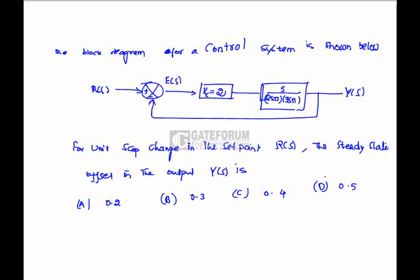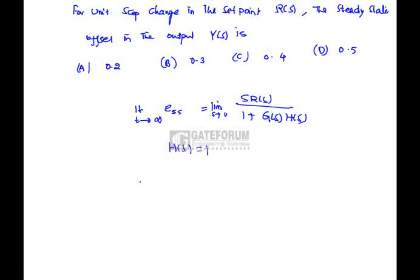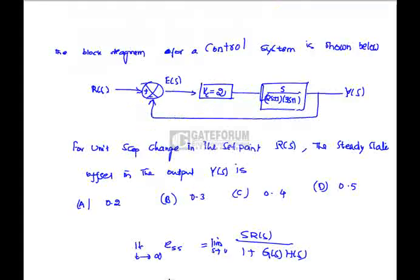Question is the block diagram for a control system is shown below. For unit step change in the set point, the steady state offset in the output Y of s. We know that the steady state error equation, that is limit t tends to infinity e of s. This is nothing but s into r of s limit s tends to 0 1 plus G of s into H of s. Here, H of s is 1, G of s is nothing but, 4 by 2s, numerator is 4, this is 2.